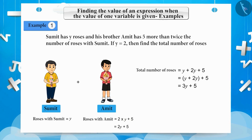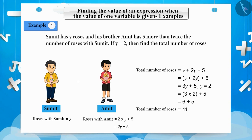As we know that the value of y is 2. By substituting y with 2, we get 3 multiplied by 2 plus 5, which is equal to 6 plus 5, which is equal to 11. Hence, the total number of roses will be 11.